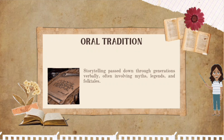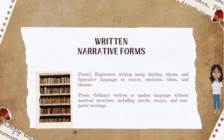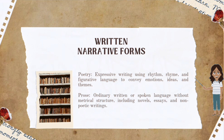Oral tradition: storytelling passed down through generations verbally, often involving myths, legends, and folk tales. Poetry: expressive writing using rhythm, rhyme, and figurative language to convey emotions, ideas, and themes. Prose: ordinary written or spoken language without metrical structure, including novels, essays, and non-poetic writings.